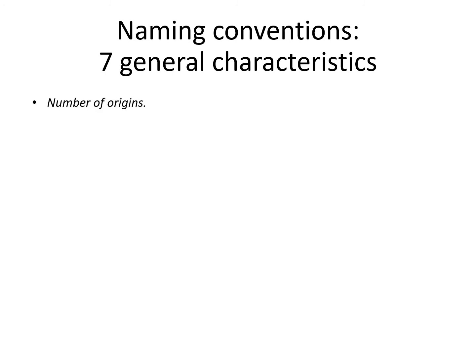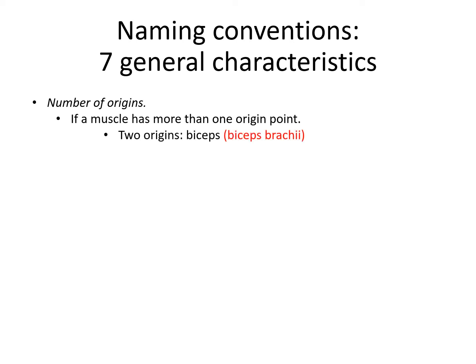The number of origins is another naming convention — this applies when a muscle has more than one origin point. A muscle with two origins is called biceps, literally meaning two heads or two origin points. An example is the biceps brachii, and another good example is the biceps femoris, one of your hamstring muscles. Three origins is called triceps — the best known is the triceps brachii, which extends the arm and acts in opposition to the biceps brachii.